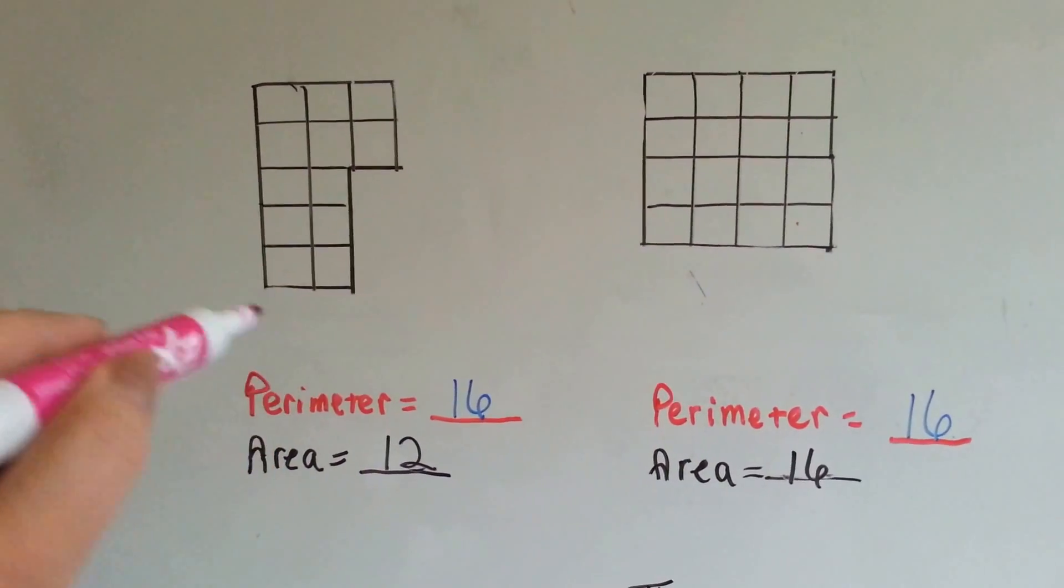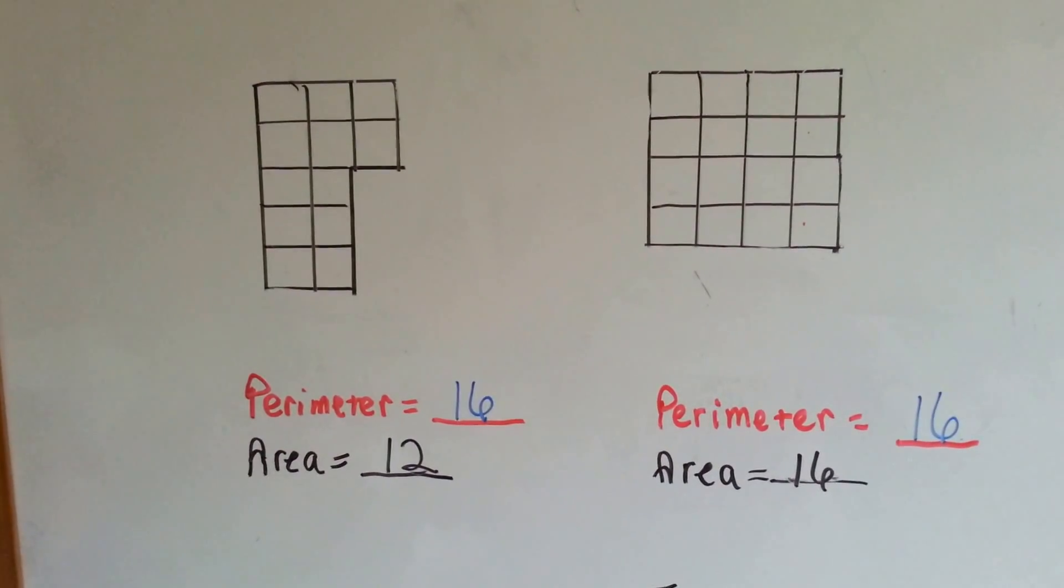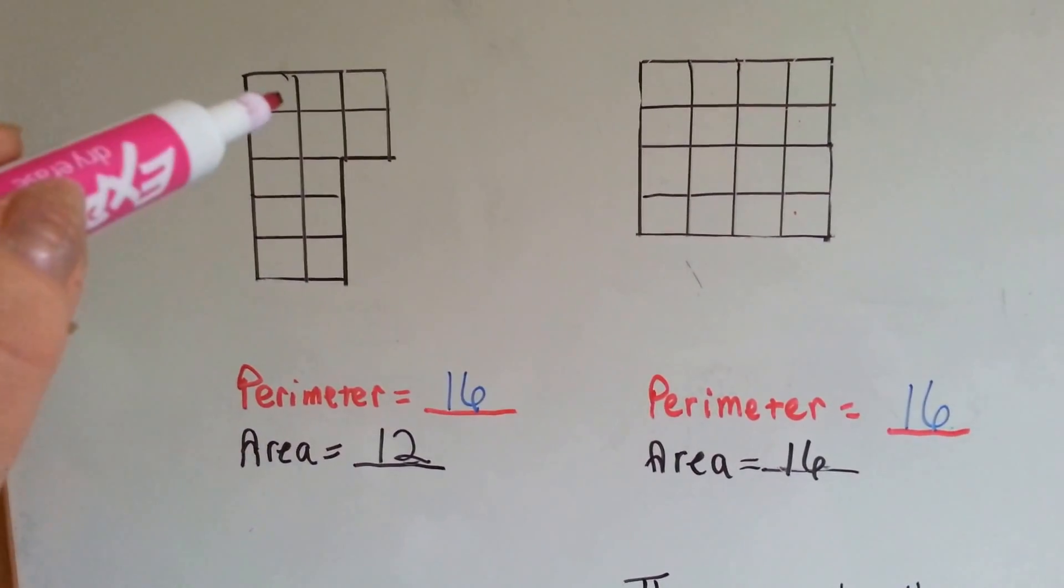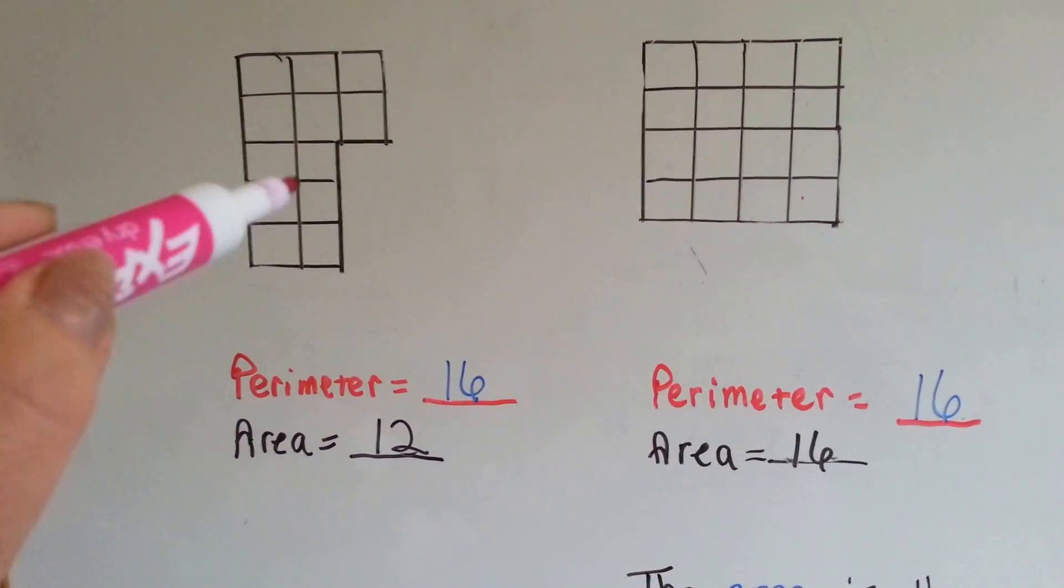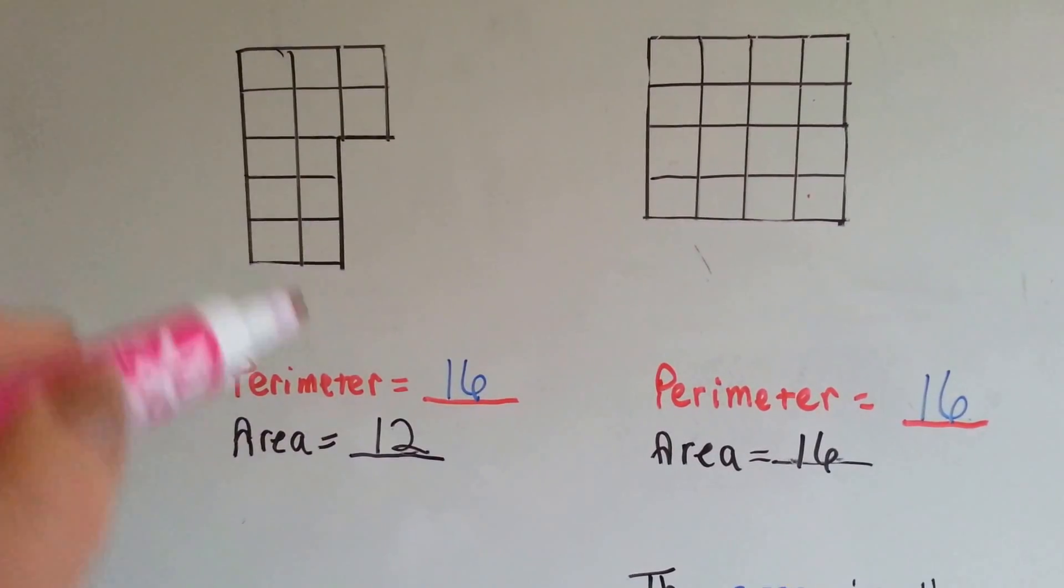So there's 16 line units going around the outside of this shape. But the area is 6 and 6 is 12.